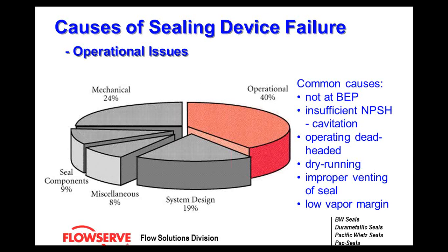Operating the pump dead-headed: oftentimes pump systems will be throttled somewhere in the system with a control valve. If you have a system designed for 200 gallons per minute but you need only five gallons per minute, you throttle down the control valve. This chokes off the pump, simulating a dead-headed operation, causing recirculation inside the pump case and building up heat, again causing a seal failure.